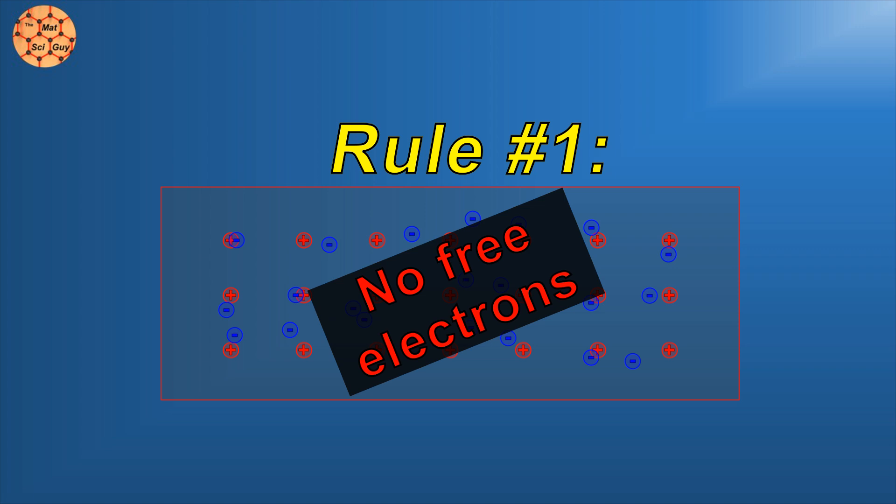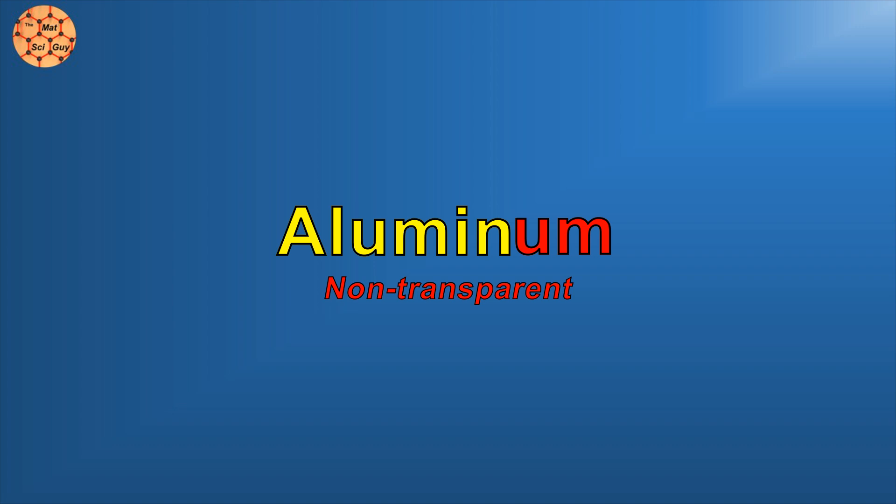But if we give Star Trek a bit more leeway in terminology, things get a little more interesting. Metallic aluminum can never be transparent, but what about alumina? Aluminum is a metal, but alumina means aluminum oxide. And maybe in the Star Trek universe, folks got a little lazy with this distinction.